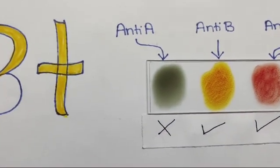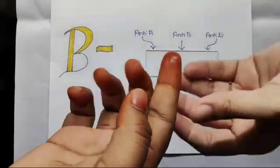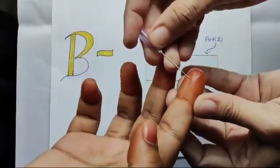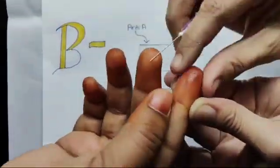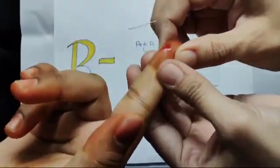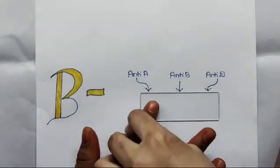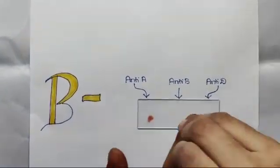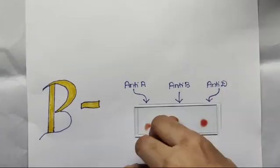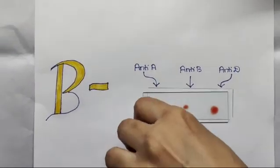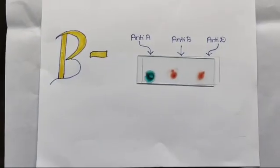For determining B negative blood group, repeat the same procedure and observe. In anti-A, no clotting is seen. Only clotting is seen in anti-B, which means only antigen B is present. Hence, it is B blood group.